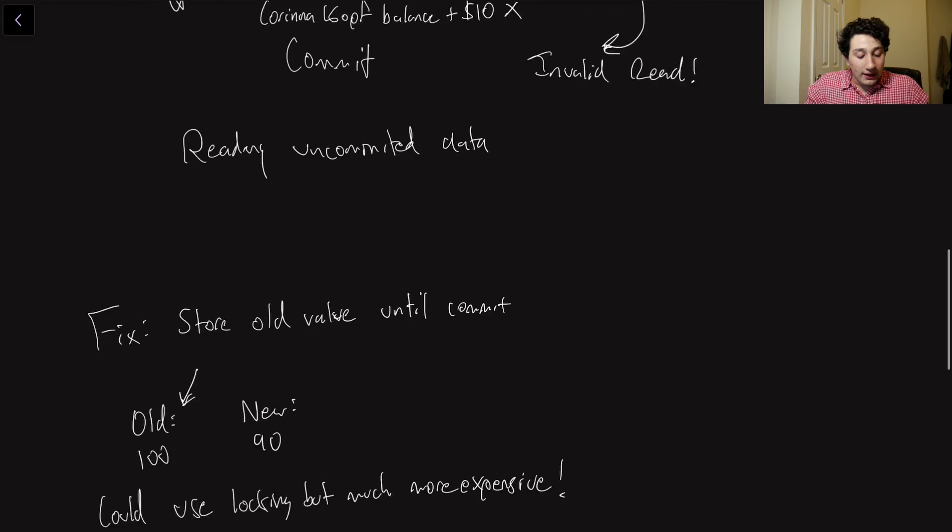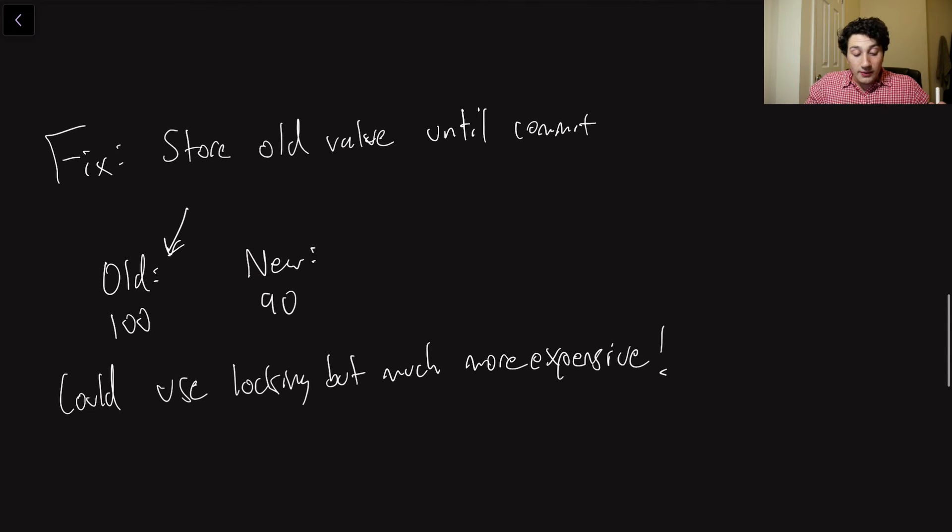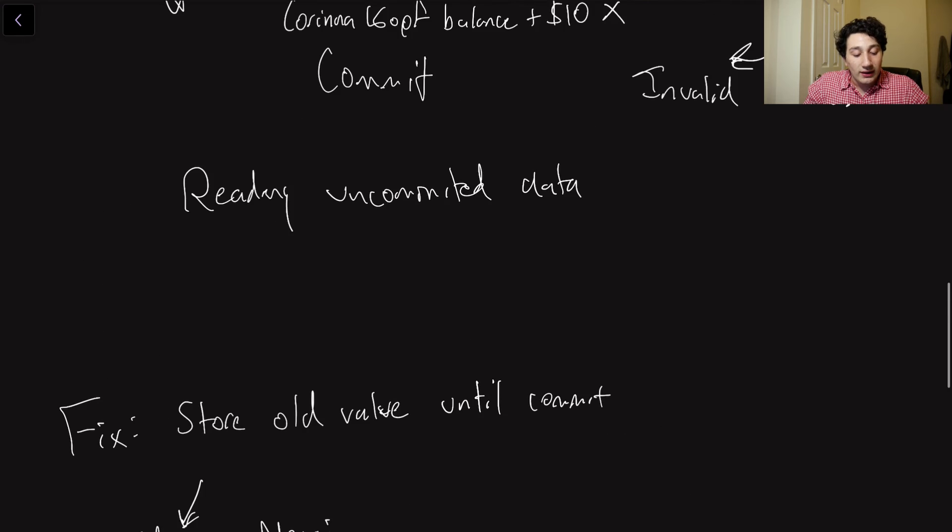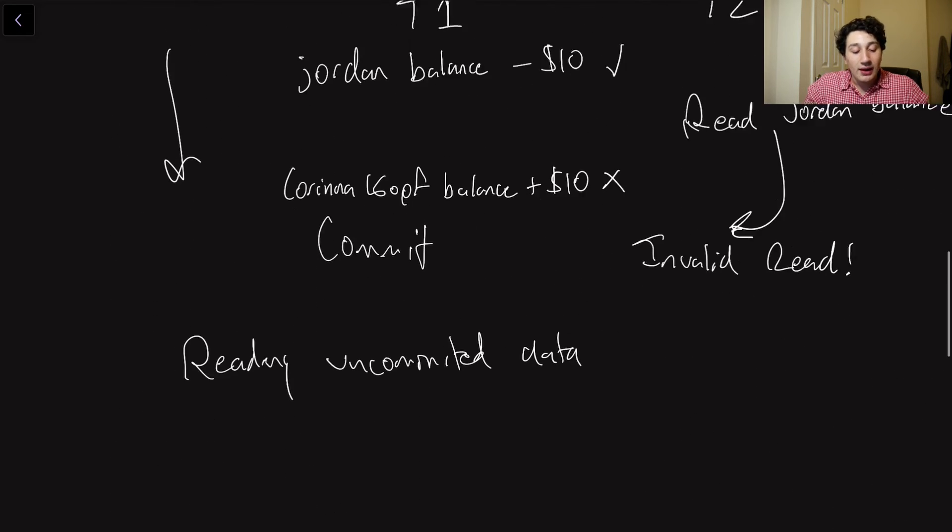So how can we go ahead and fix dirty reads? Well, there are a couple of options. The first one is we could do row level locking, like what we did before. I could do row level locks because I would have to grab the relevant row in order to basically read it, but I couldn't read it yet because someone else had it locked because they were writing that row. However,